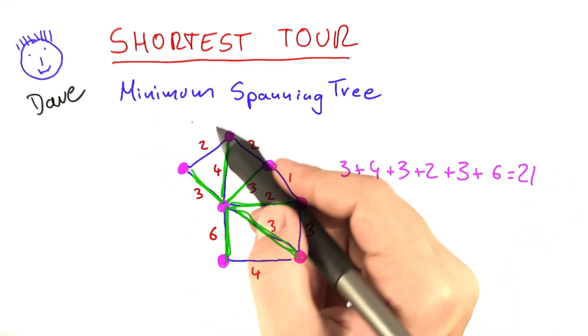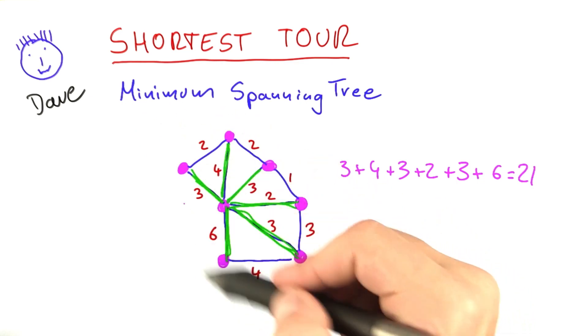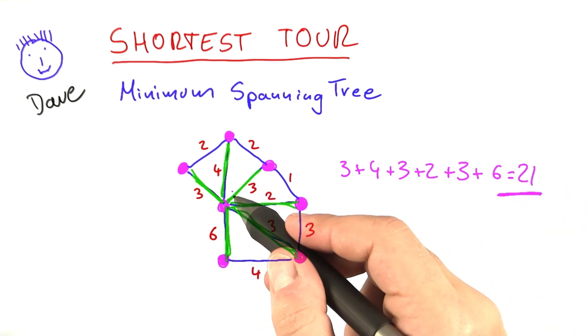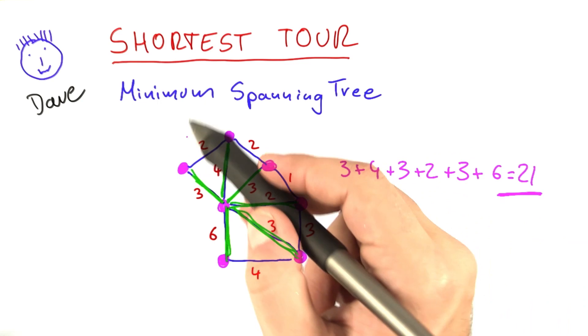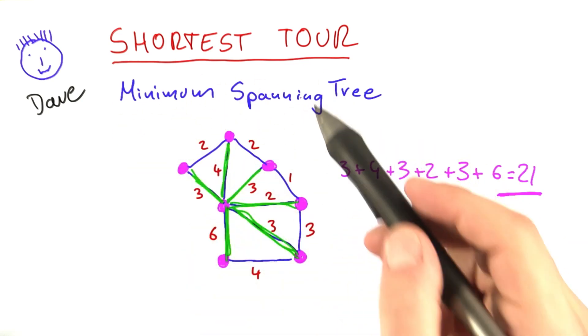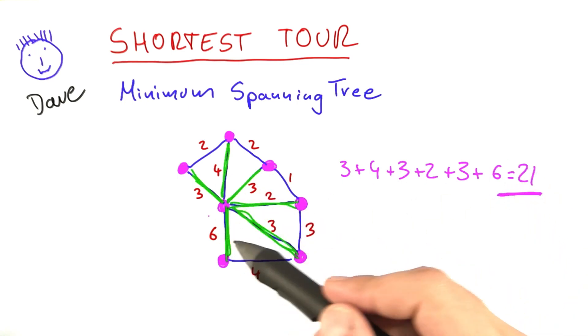And now you can almost guess what a minimum spanning tree will be. A minimum spanning tree is the spanning tree for the graph for which the total weight, the sum of all of the edge numbers, is the smallest possible one. A graph can have more than one minimum spanning tree, but every minimum spanning tree has to have the property that the sum of the edges is as low as possible.